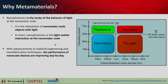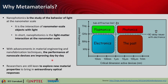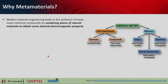With advancements in material engineering and nanofabrication techniques, the performance of nanoscale devices is improving day by day. Researchers are keen on exploring new material properties. Modern material engineering deals with different chemical matters made of pure substances such as pure elements, compounds of two or more different atoms, or different mixtures such as alloys which are solid mixtures of metals, solutions which are liquid mixtures of compounds, and blends and composites which are solid mixtures of different compounds.